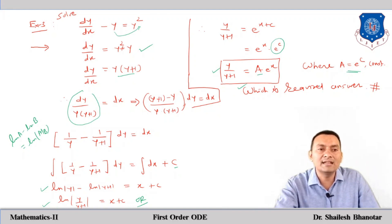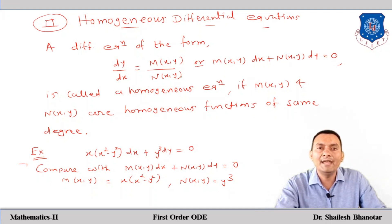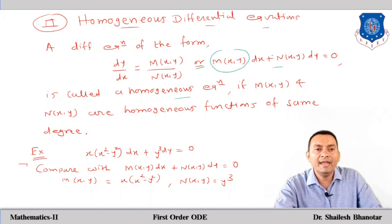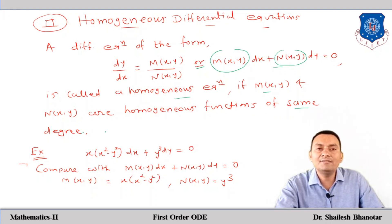Next, we discuss homogeneous differential equations. The general form is dy/dx = M(x,y)/N(x,y), also written as M(x,y)dx + N(x,y)dy = 0. This equation is homogeneous if M(x,y) and N(x,y) are homogeneous functions of the same degree. If M has degree 2, then N must also have degree 2; if degrees differ, it is not homogeneous.